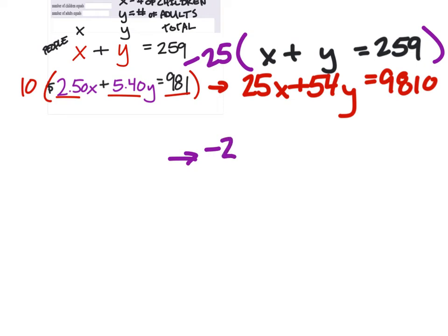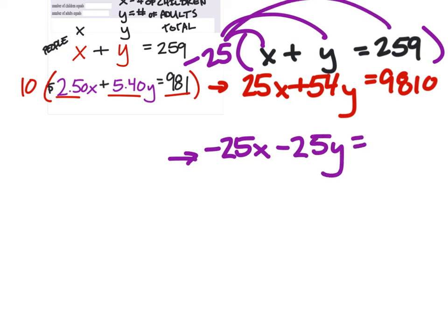So that gives us a new system. I got negative 25x. So I multiplied it by the x. Now the y. Negative 25y. Equals negative 25 times 259. I don't know what that is off the top of my head. And we didn't do anything to the bottom equation that time, so it stays.